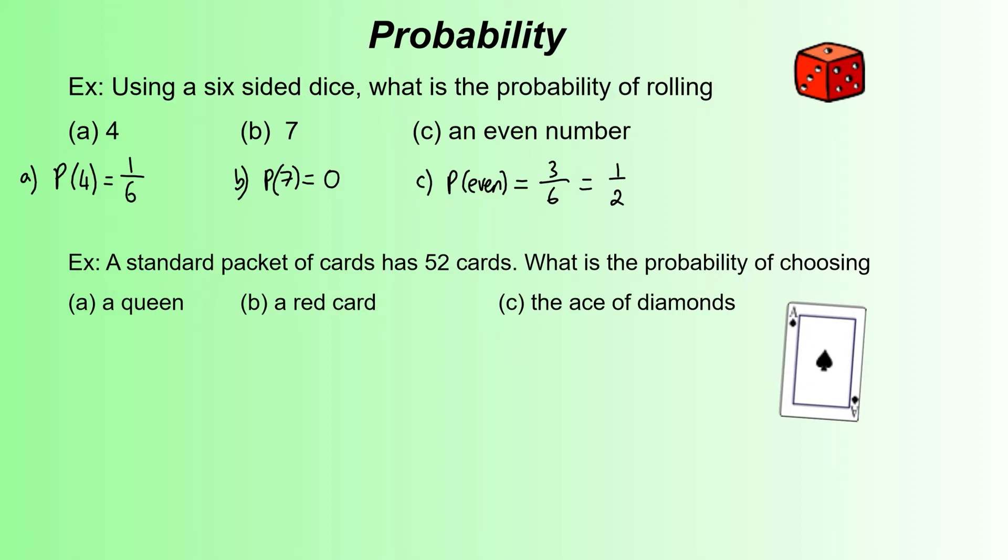The same if we did an odd number, that would be a 1 out of 2 chance as well. Lots of different things you can do with dice, and you can actually start to look at combining probability with multiple dice rolls. That's a bit more complicated. We're going to stick to the simple probability just now.